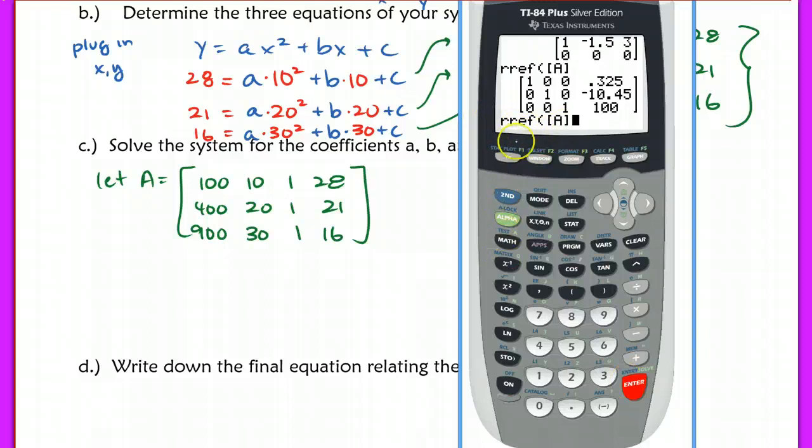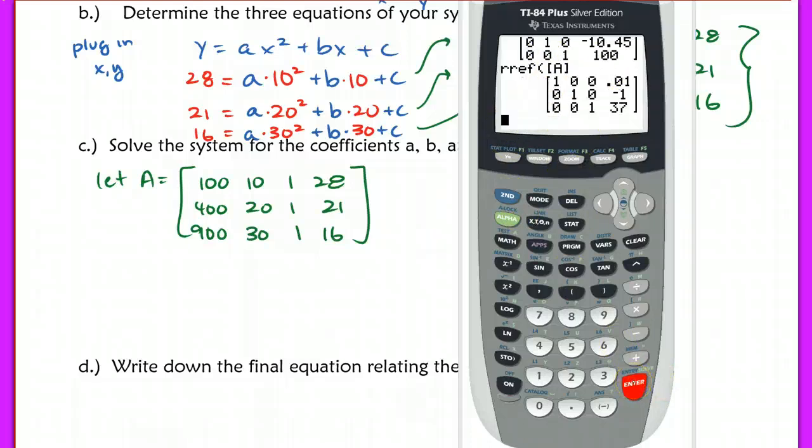Now when I go to my home screen and I hit second quit, I'm going to hit second matrix and RREF. I'm sorry, instead of hitting second matrix and finding it all, I'm just going to hit second entry and call up the last thing. And because I've edited A, I won't get the same numbers as last time. But I get this system here.